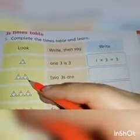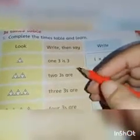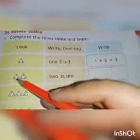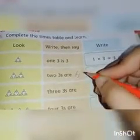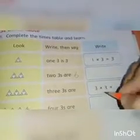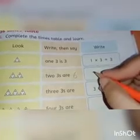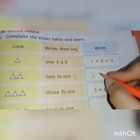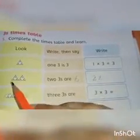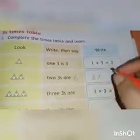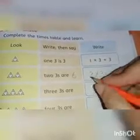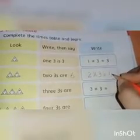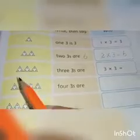Here we have two triangles and each triangle has three dots. The number of triangles is two and the number of dots is three. Two threes are — to find the answer we are going to count all the dots together: one, two, three, four, five, six. Two threes are six. Write six in the box. Then we write the number of triangles — two — then the special sign of multiplication, and the size is three. 2 × 3 = 6. Three twos are six. Write six in the box.